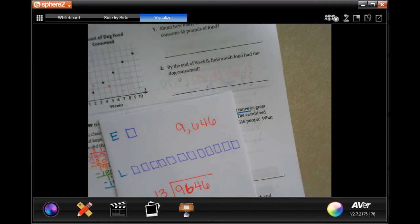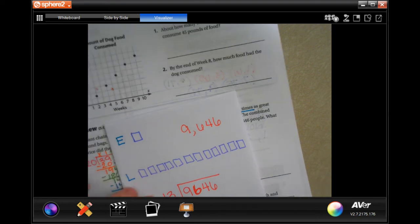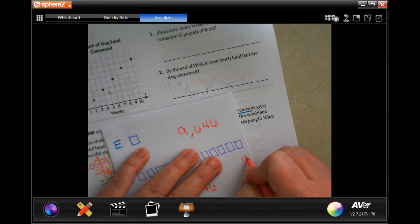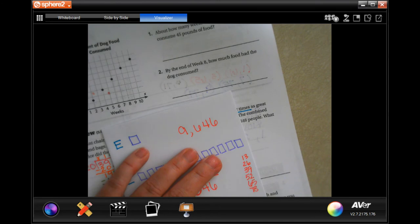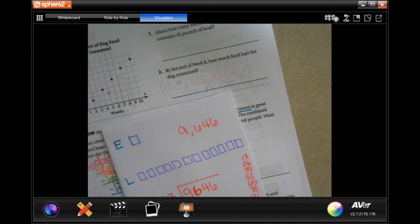So we have 13, 26, 39. Notice I'm using my calculator but only for my multiples. I am not using it for my math. Let's stop there for now and see how we do.